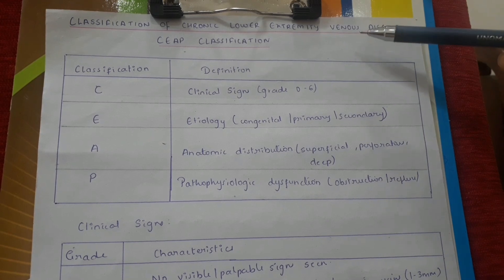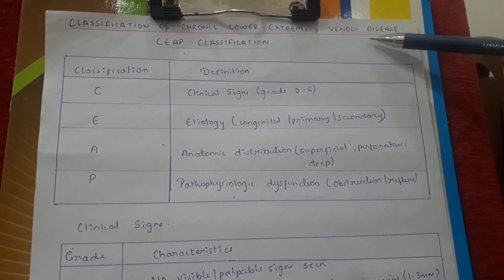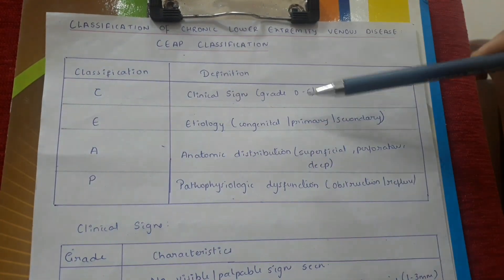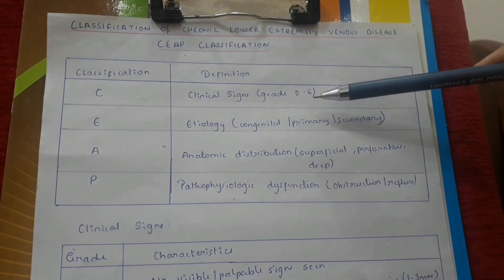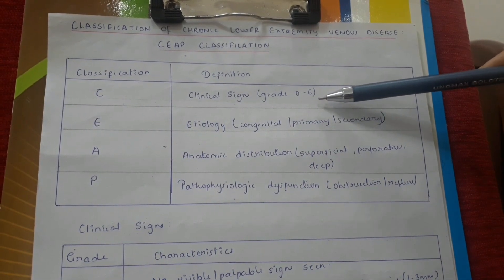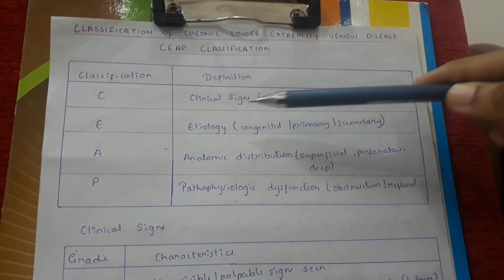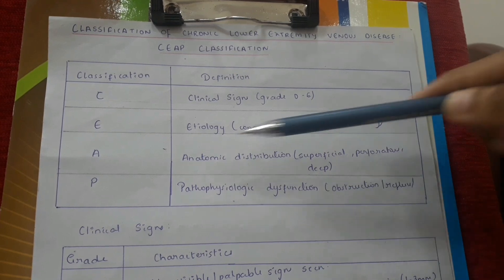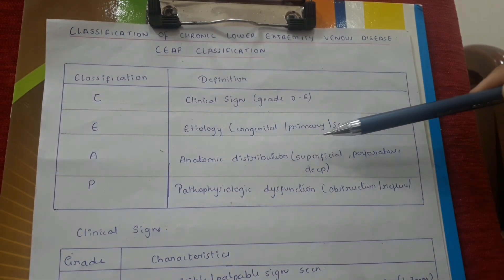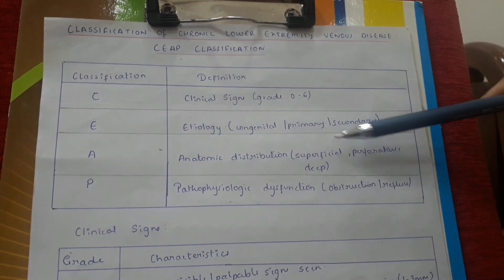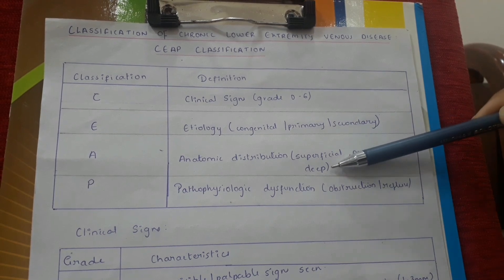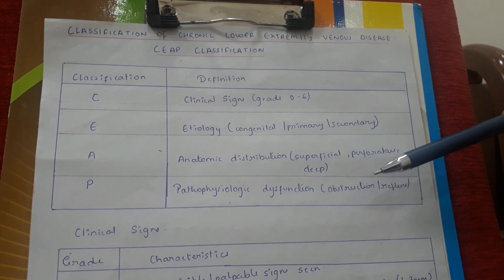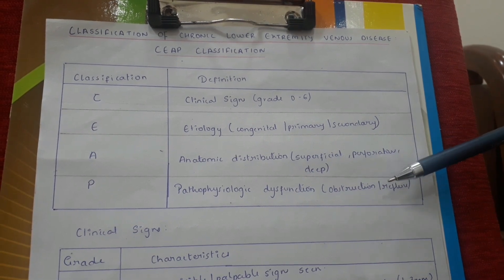Classification of chronic lower extremity venous disease — the CEAP classification. C stands for clinical signs, graded from 0 to 6. E stands for etiology — the cause, which can be congenital, primary, or secondary. A stands for anatomic distribution, which includes the superficial, perforators, or deep system. P stands for pathophysiologic dysfunction, which can be either obstruction or reflux.